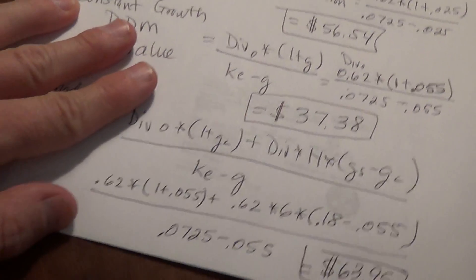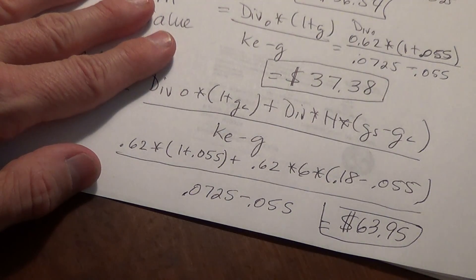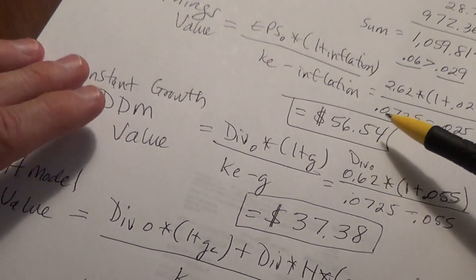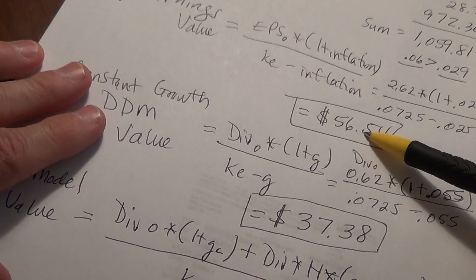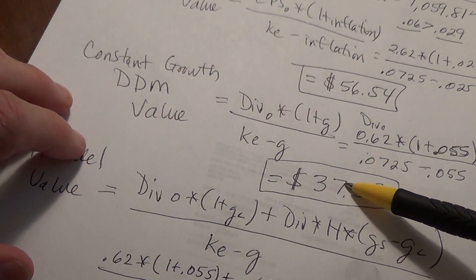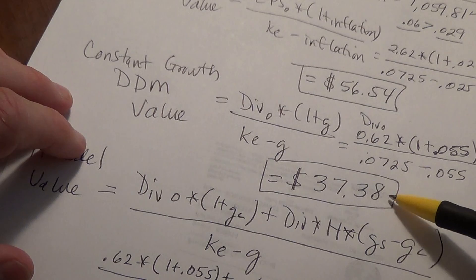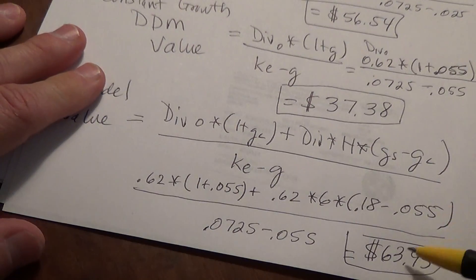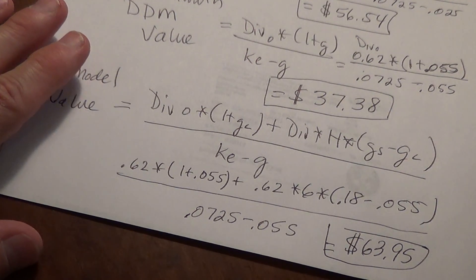In a course, we would then take that value and compare it to the current stock price, whatever that might be. So our three values: cap earnings $56.54, constant growth DDM $37.38, and H model $63.95. Thanks.